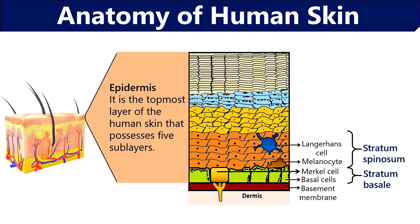In stratum spinosum you will find specialized cells like melanocytes and Langerhans cells. Melanocytes produce melanin pigment, which is responsible for skin pigmentation. Langerhans cells are a type of dendritic or antigen-presenting cell that protects the skin from foreign bodies. The cells of stratum spinosum then migrate upwards to form stratum granulosum, where the cells begin to die and become flattened. This layer contains more keratinocytes that synthesize keratin, a colorless protein.